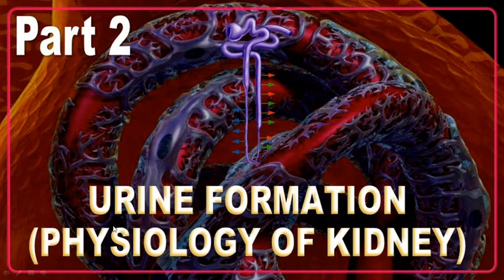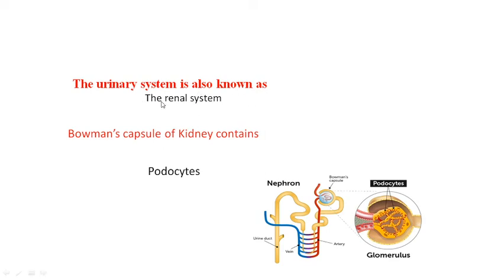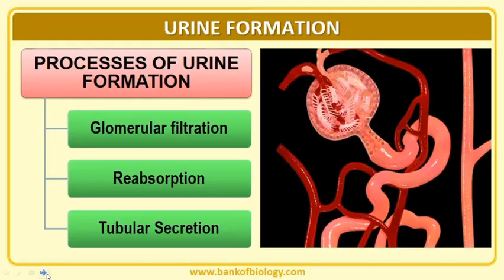Now, how is urine actually formed? Urine formation involves three steps: first is glomerular filtration, second is reabsorption, and third is tubular secretion. The urinary system is also known as the renal system. Bowman's capsule of the kidney contains cells referred to as podocytes — an important aspect to remember.